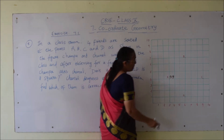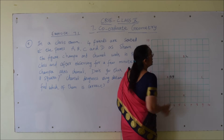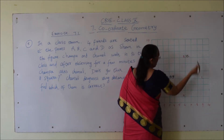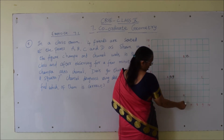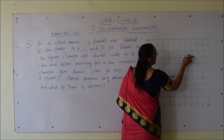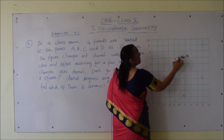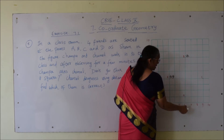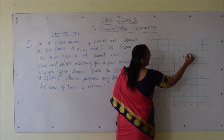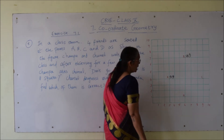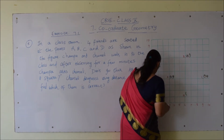Next, point B. The X coordinate is the distance of a point from the Y axis, so that is 6. The Y coordinate is the distance of the point from the X axis, so that is 7. So B coordinates are (6, 7). C is (9, 4) and D point is (6, 1).